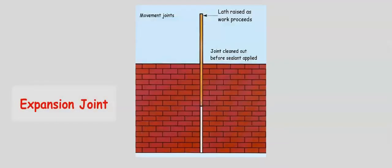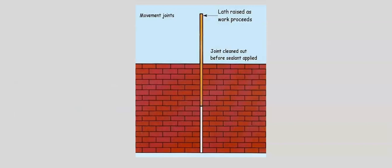Like the expansion joint in bridges, expansion joints can be provided at points on the long section of a structure such as walls and floors, so that the elements of the structure are physically separated and can expand without causing structural damage.